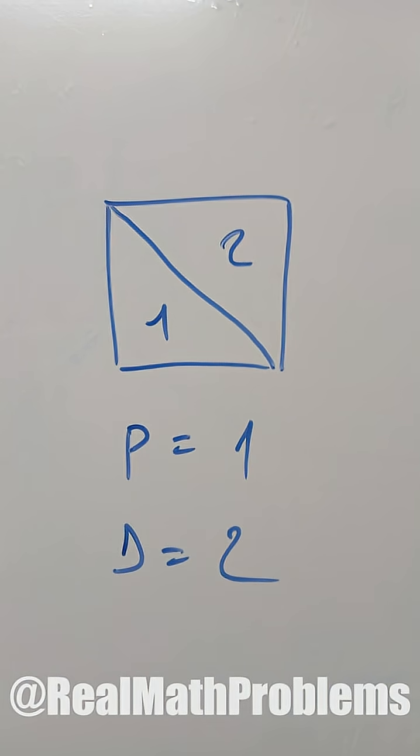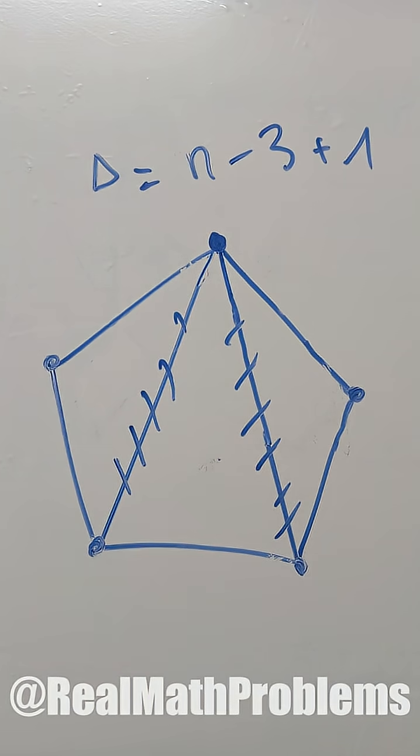So the number of triangles in a regular polygon will be the number of diagonals p plus 1, or n minus 3 plus 1, which is n minus 2.